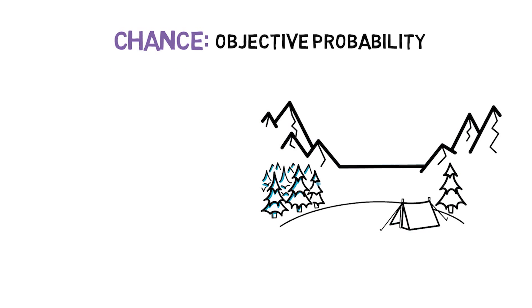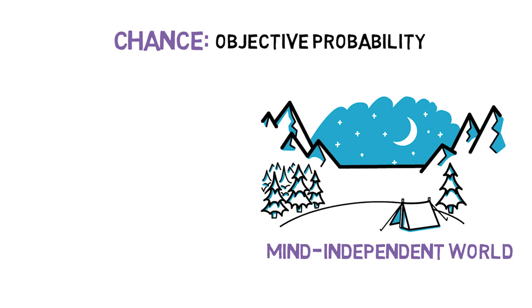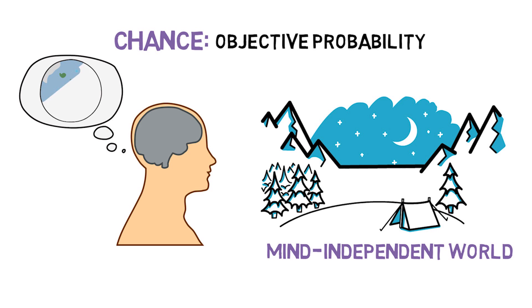What is chance? Chance is objective probability. That is to say, chance is a type of probability that depends only on what the mind-independent world is like. It does not depend at all on what we happen to believe about that world.